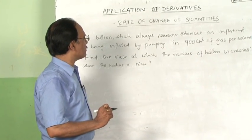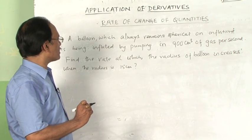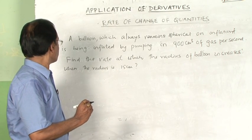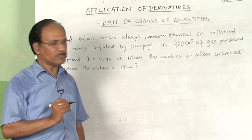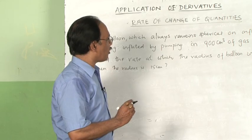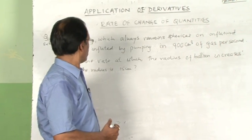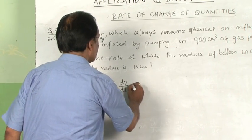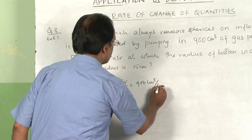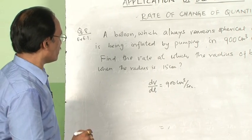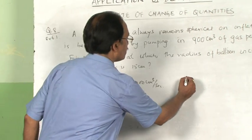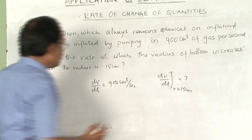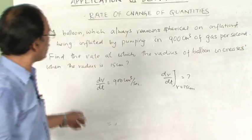A balloon which always remains spherical on inflation is being inflated by pumping in 900 cubic centimeters of gas per second. Find the rate at which the radius of the balloon increases when the radius is 15 centimeters. In this question, you are given the rate at which the volume is being inflated: dV/dt = 900 cm³/s, and you are asked to find dr/dt when the radius is 15 centimeters. First, we establish the relationship between volume and radius.